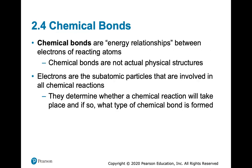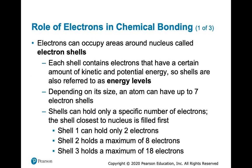Chemical bonds are energy relationships between electrons of reacting atoms. They are not actual physical structures. Electrons are the subatomic particles always involved in chemical reactions, and they determine whether a chemical reaction will take place and what type of chemical bond is formed.